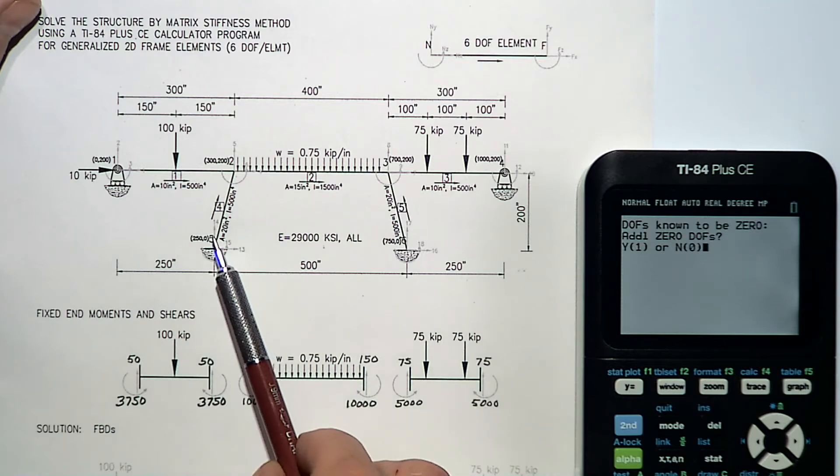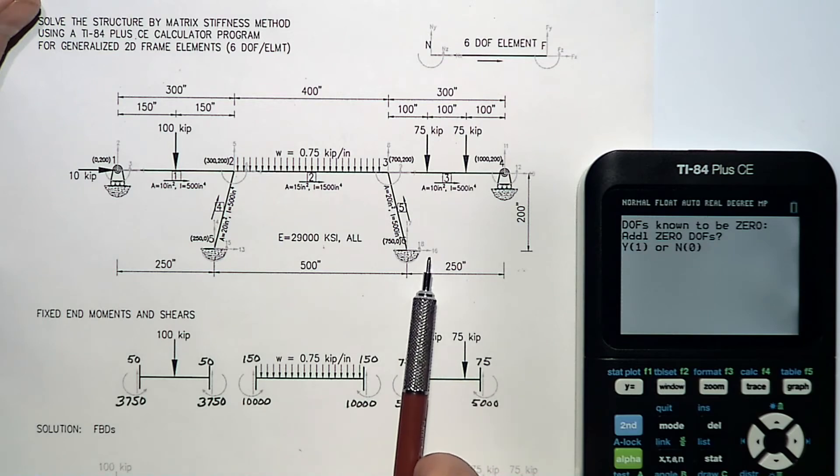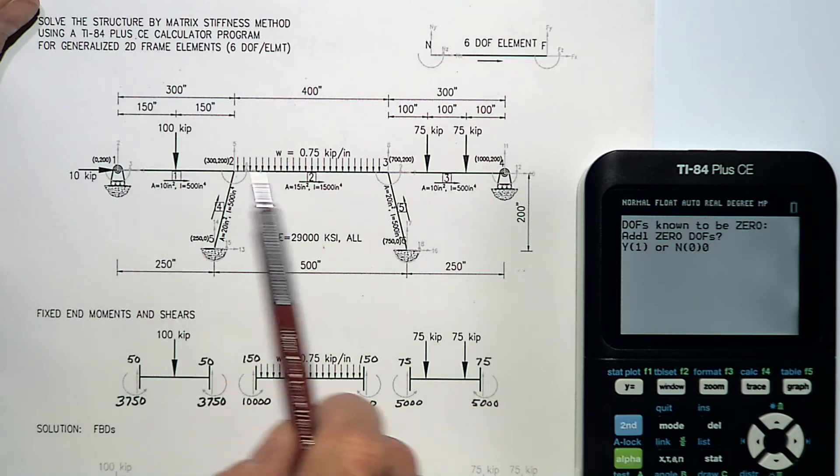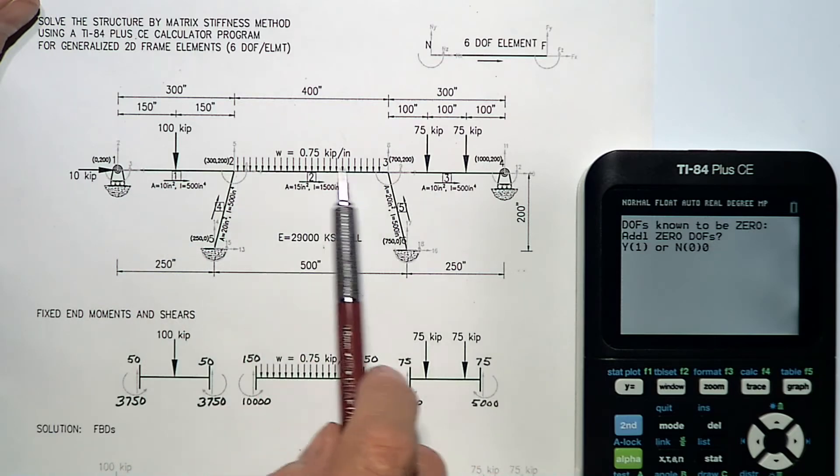Then I have thirteen, fourteen, fifteen, and then sixteen, seventeen, and eighteen. Now I'm going to answer no. There aren't any other degrees of freedom that are known to be zero. All the other ones are unknown degrees of freedom.